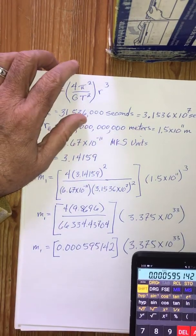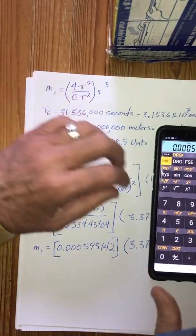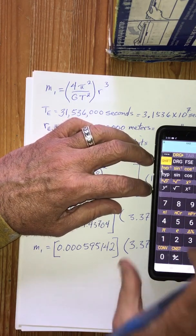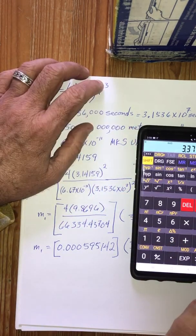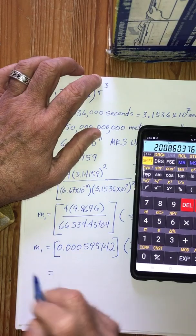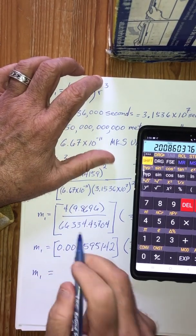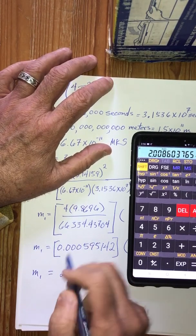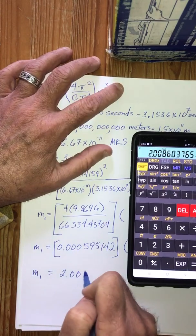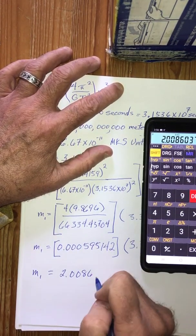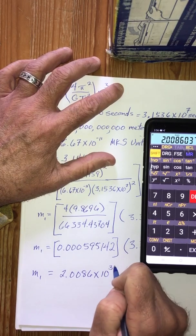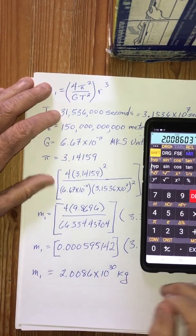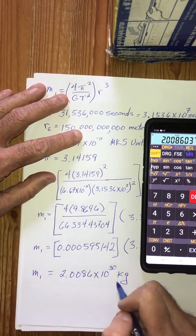So let's do that. Let's multiply by 3.375 EXP 33. And we get M1 is equal to 2.0086 times 10 to the 30th kilograms. So that's the answer that we get for the mass of the Sun.